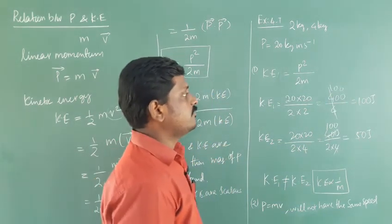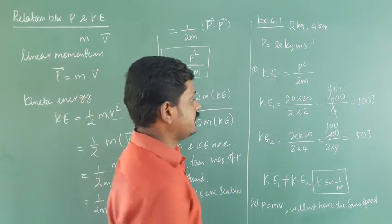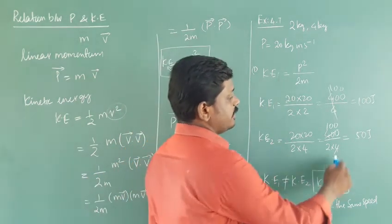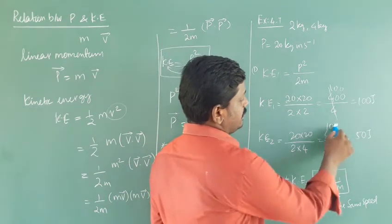Then second particle, again 20 into 20, 2 into 4. So 400 by 8, so 100 by 2, you will get 50 joules.